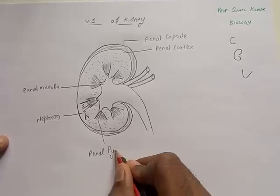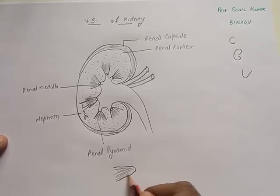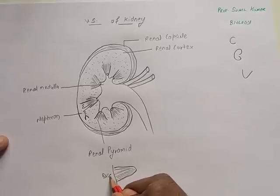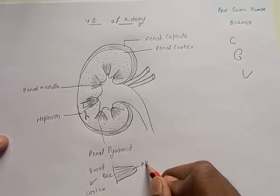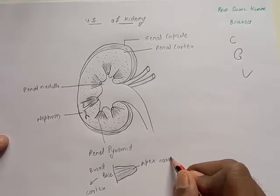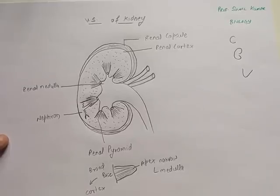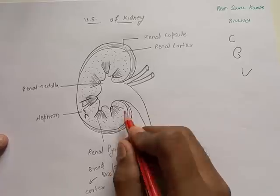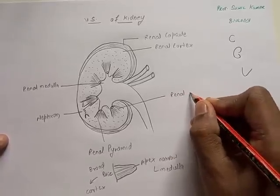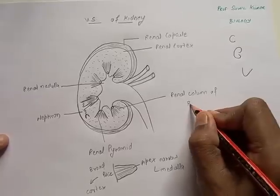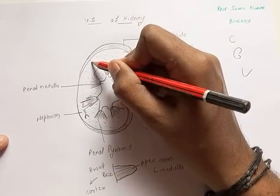The inner part is called the renal medulla. The renal medulla consists of important structures called renal pyramids, which are triangular in shape. The base of the pyramid is broad and faces toward the cortex, while the apex is narrow and faces toward the medulla. There are 8 to 18 renal pyramids in the kidney. The pyramid has small tubules — the nephron's collecting tubules — opening into it, called the columns of Bellini.